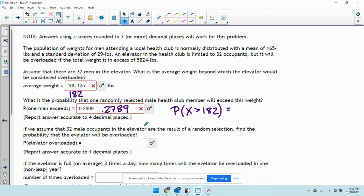Okay. So, if we assume that 32 male occupants in the elevator are the result of a random selection, find the probability that the elevator will be overloaded. So, we want to know if there's 32 people, what's the chances that it'll be overloaded?